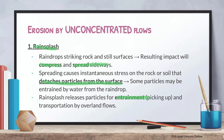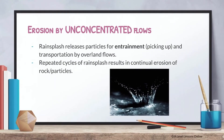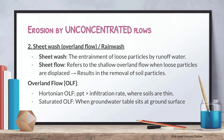Rain splash is the first erosion process under unconcentrated flows. Unconcentrated means the water is not concentrated — it can arrive very irregularly and is not in one dense blob. Rain splash releases particles for entrainment, which are then transported by overland flows. Repeated cycles cause continual erosion of rocks and particles. This picture shows a raindrop falling on the ground, splashing and causing particles to detach.